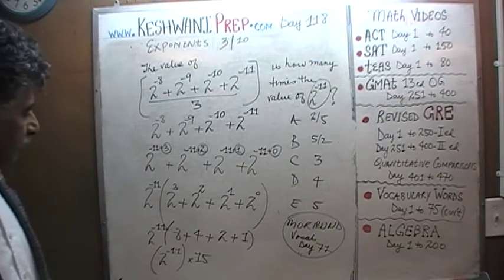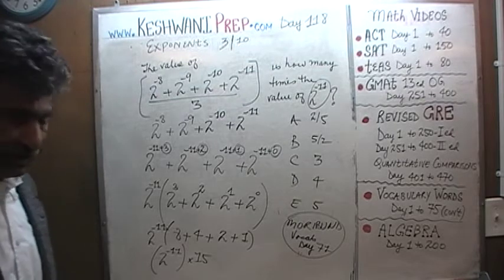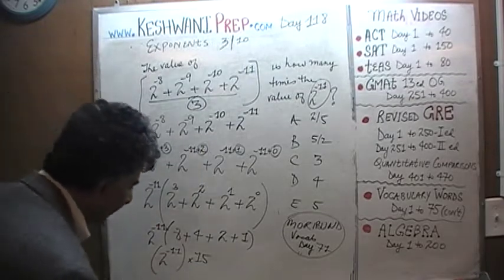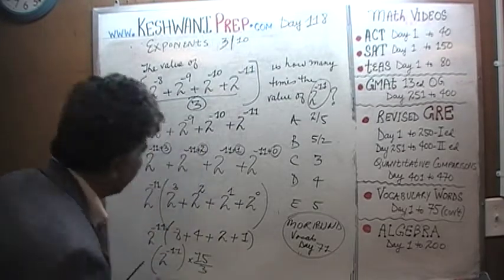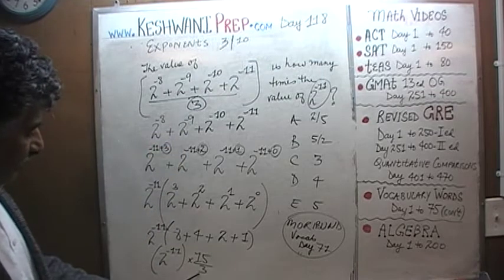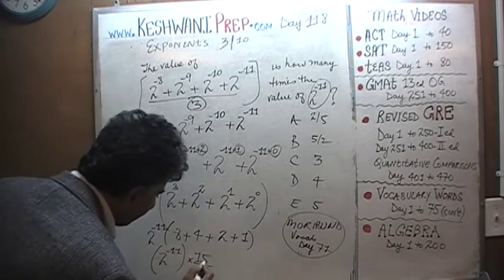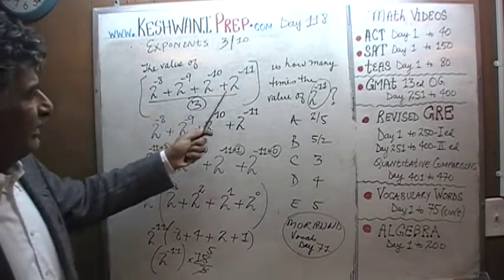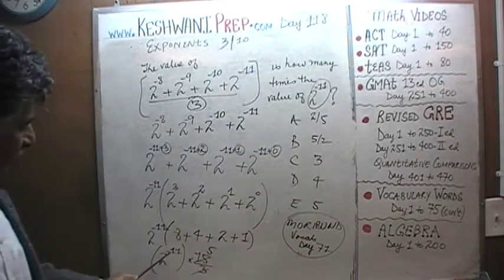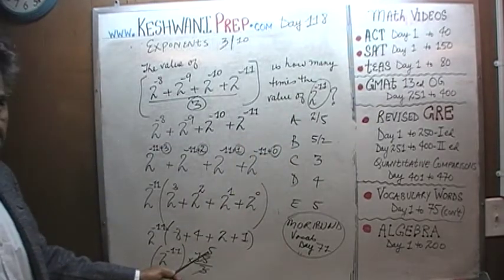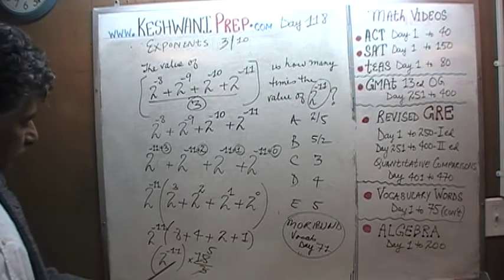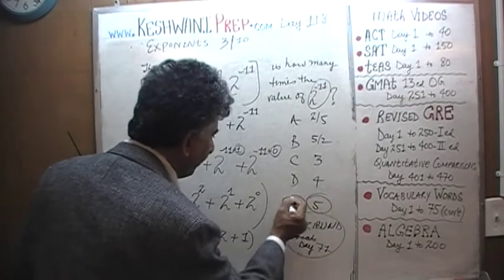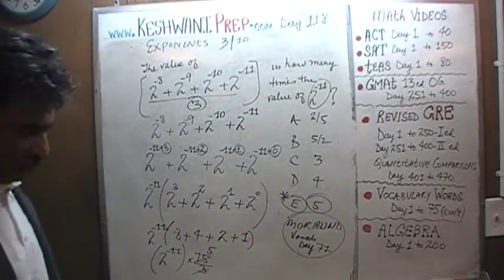Now I'm going to pick up the 3 here. This is times 15, and now we put the 3 at the very bottom — the 3 that we had left behind. Then 15 cancels with 3 and it becomes 5. The question was: this quantity is how many times the value of 2 raised to 11? It's right here — it's 2 raised to 11 times 5. This quantity is 5 times 2 raised to 11. That was it.